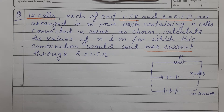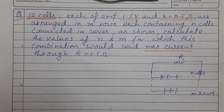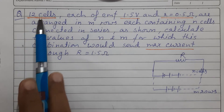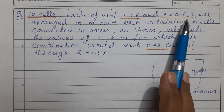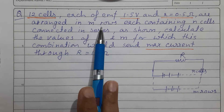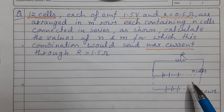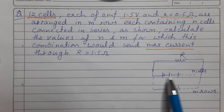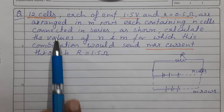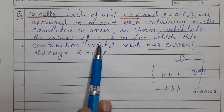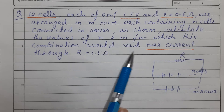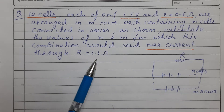Today we will take some numericals for the combination of cells. Question number 1 says: 12 cells, each of EMF 1.5 volt and internal resistance 0.5 ohm, are arranged in M rows each containing N cells. Calculate the value of N and M for which this combination would send maximum current through R equal to 1.5 ohms.